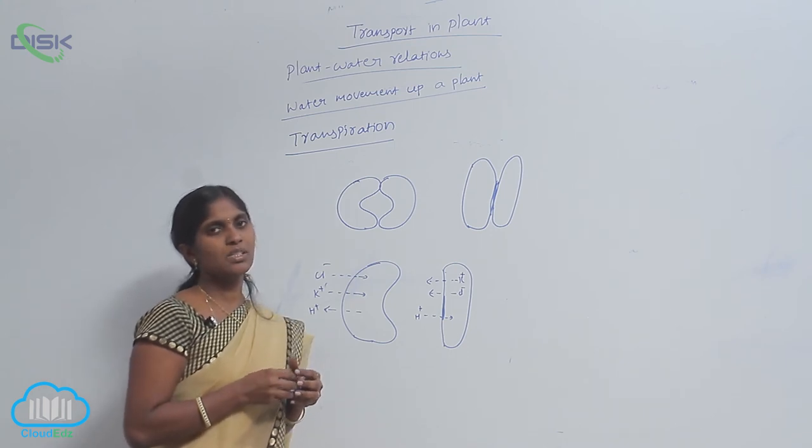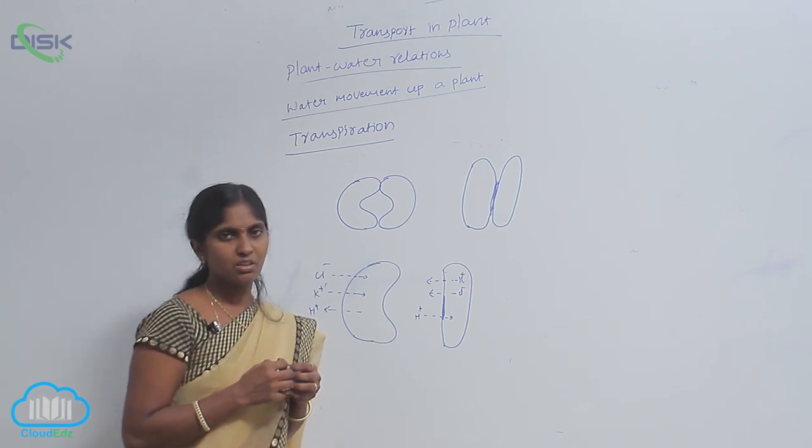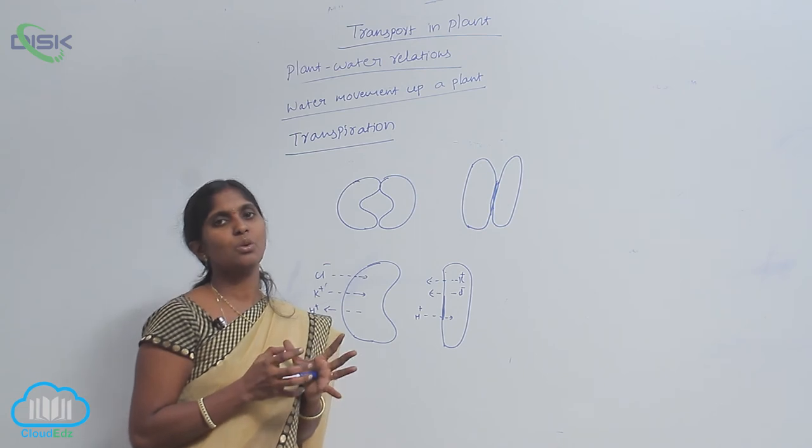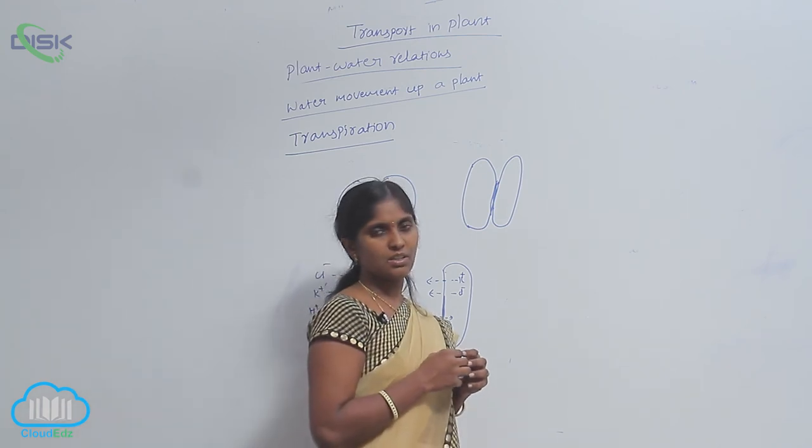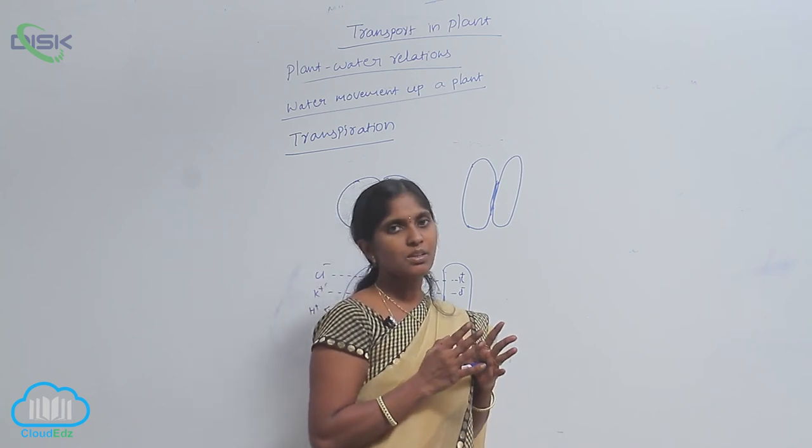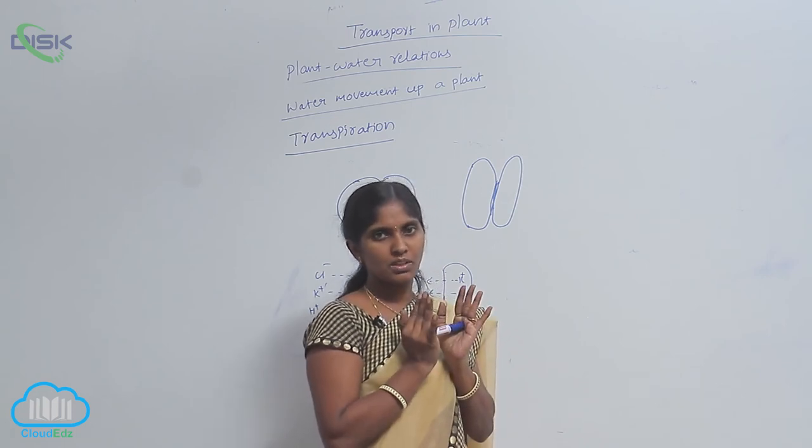When the guard cells are rich with water, then they become turgid. In the turgid shape, the stomata pore is opened. In the loss of water conditions, the stomata becomes flaccid. It means the guard cells become flaccid, and the stomata pore remains closed.